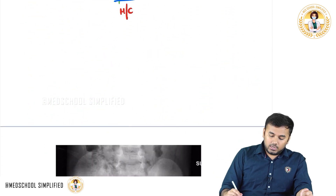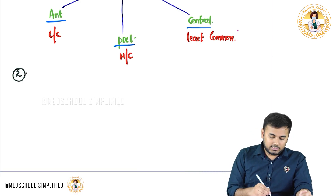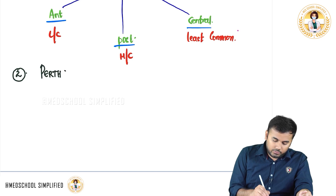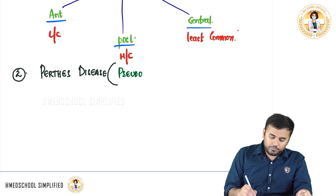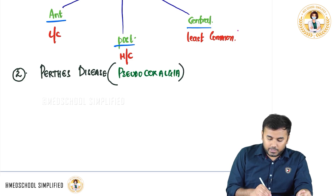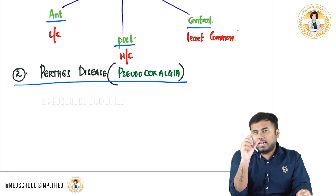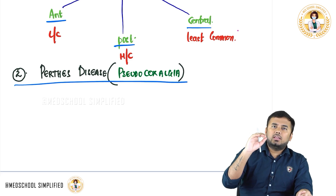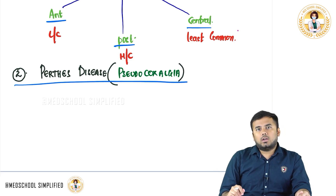The second important clinical condition regarding the hip is Perthes disease, also called pseudocoxalgia. In Perthes disease, if you look at the head of the femur, there is destruction and flattening of the femoral head. The head of the femur, which is normally round, gets destroyed and becomes flat.